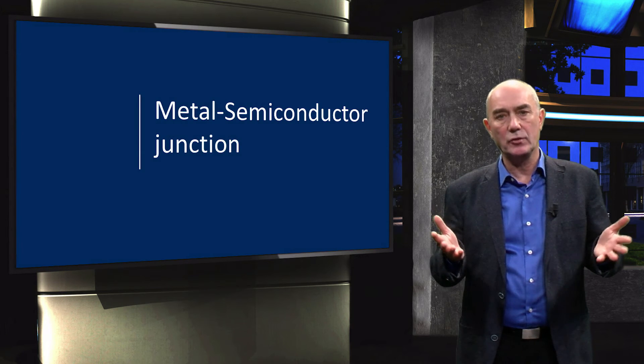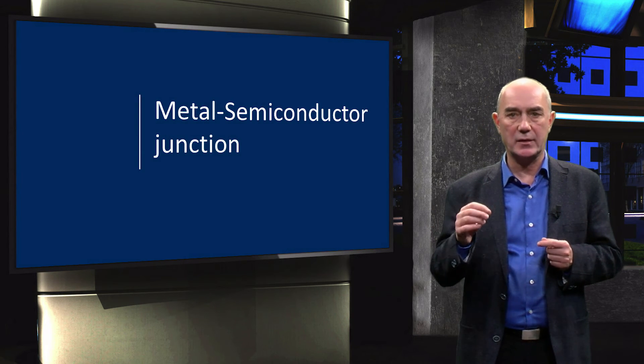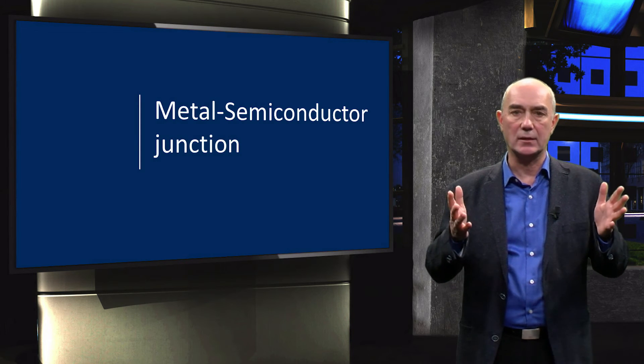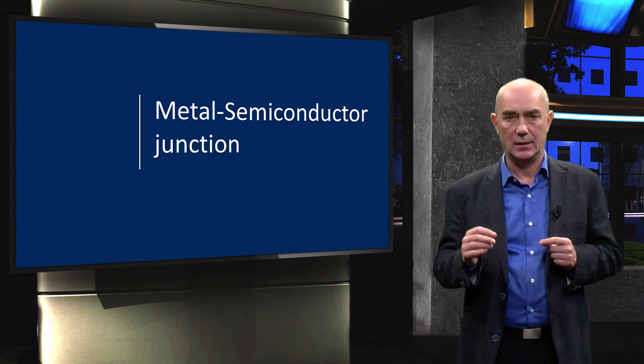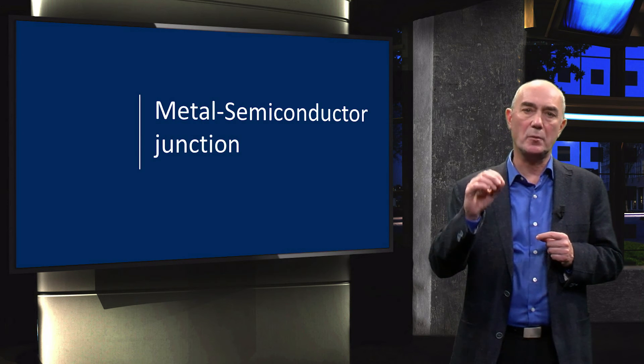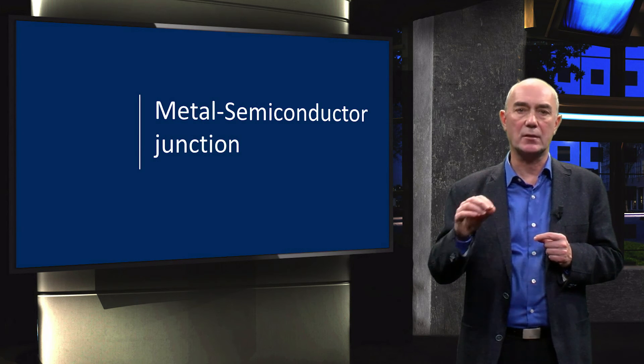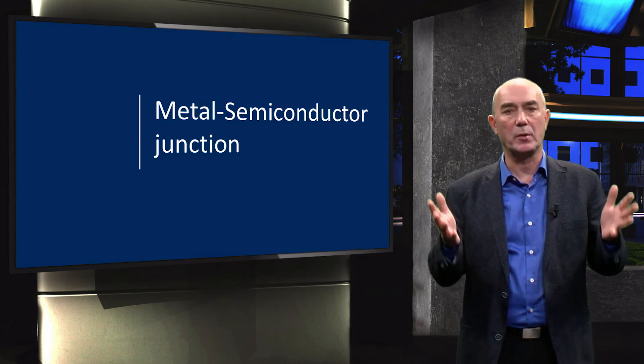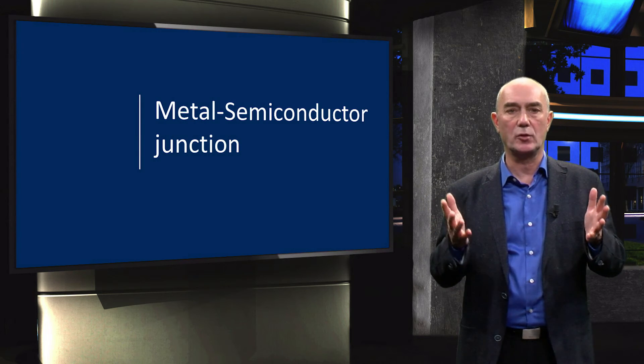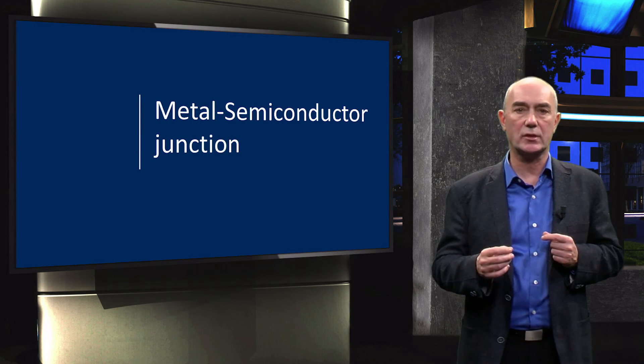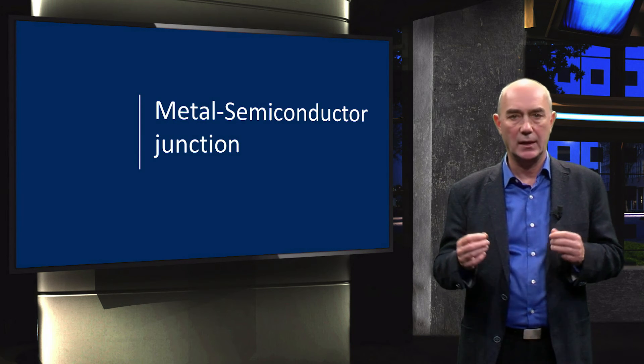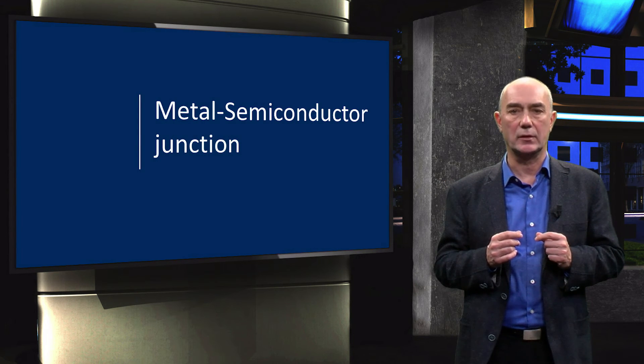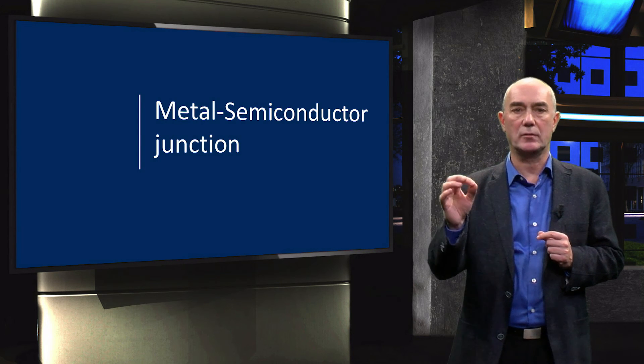P-n junction are not the only junctions that are present in a solar cell. Photoactive layers are also placed in contact with metals. This will be one of the main topics of the final week of semiconductor physics in this course. In this week, you will also explore other advanced semiconductor topics like the recombination current, J-node, and the junctions formed between two different semiconductor materials, so-called heterojunctions.